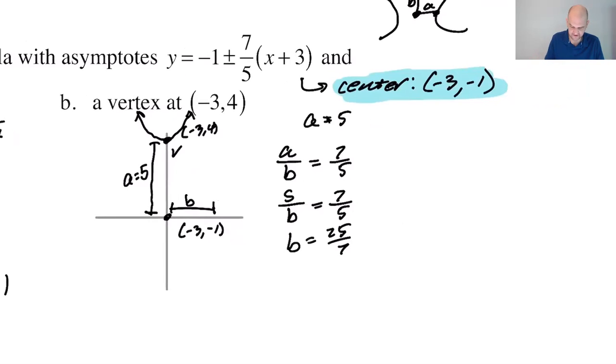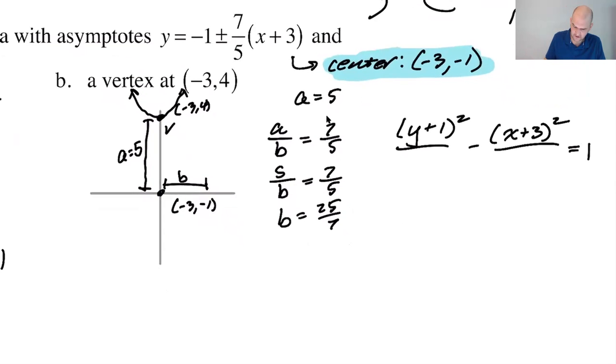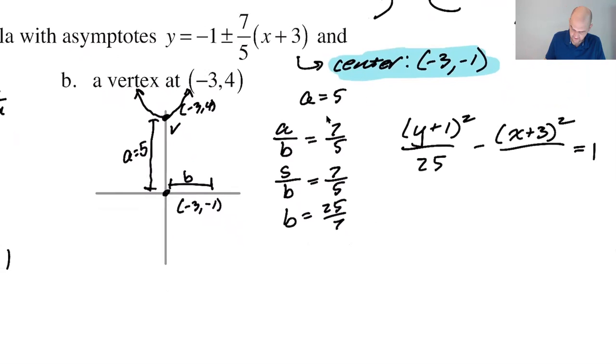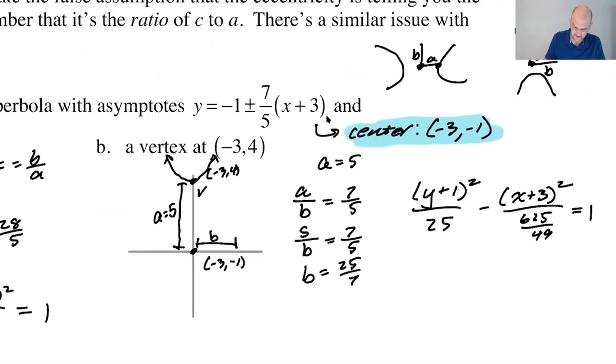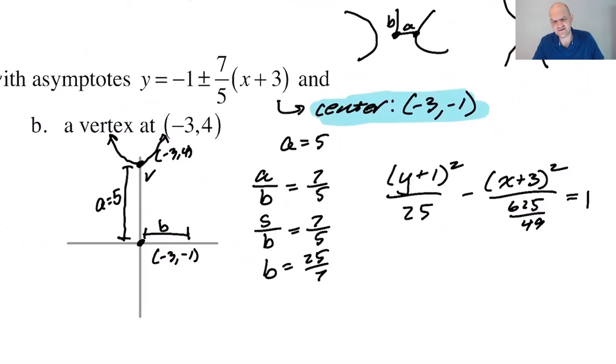So we know a, we know b we're basically done. So vertical, which means that Y goes first and then don't mess up the HK thing. Y always goes with K. And X always goes with H. A is 5. So this will be 25. B is 25/7. So this will be 625 over 49, that we can sort of check it.